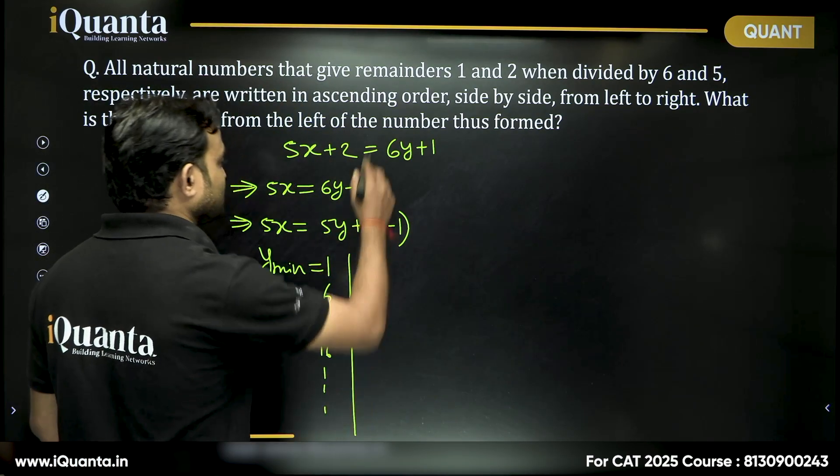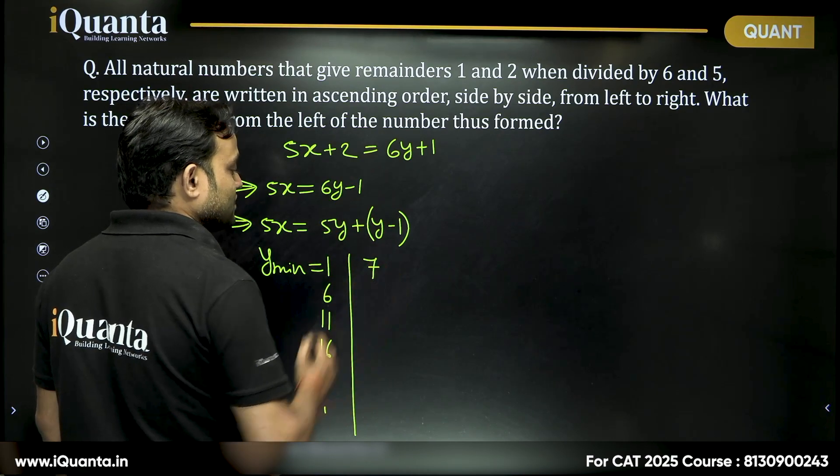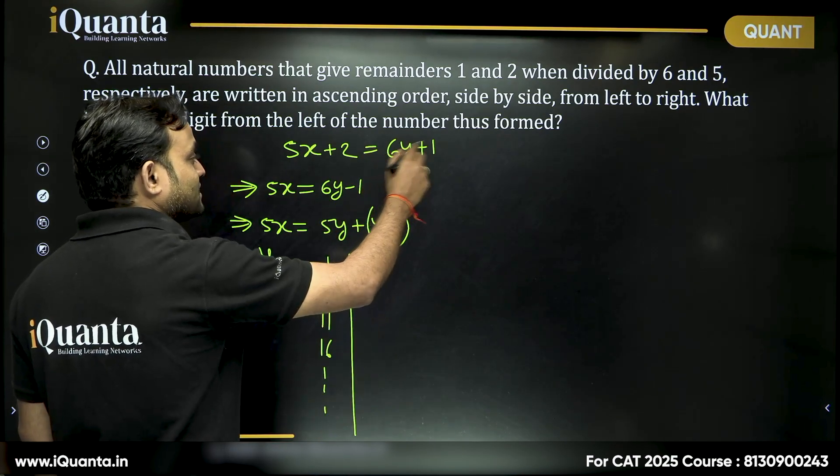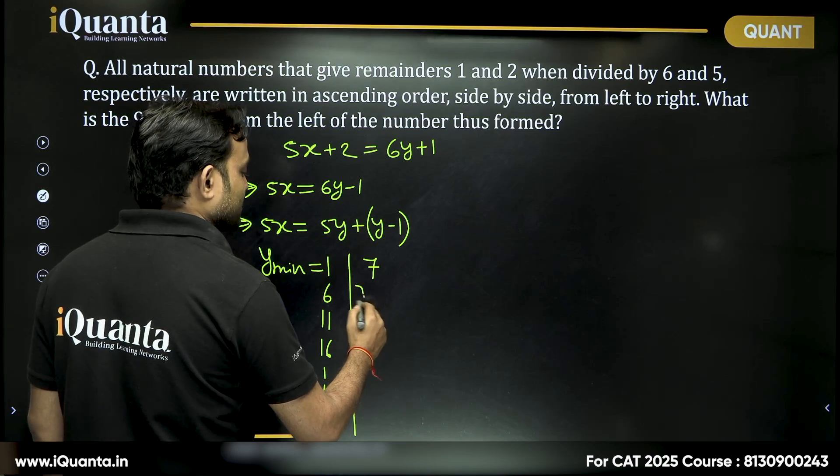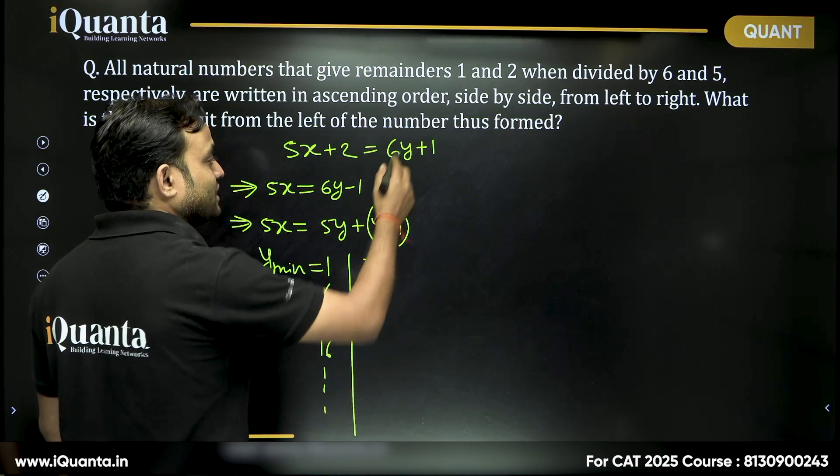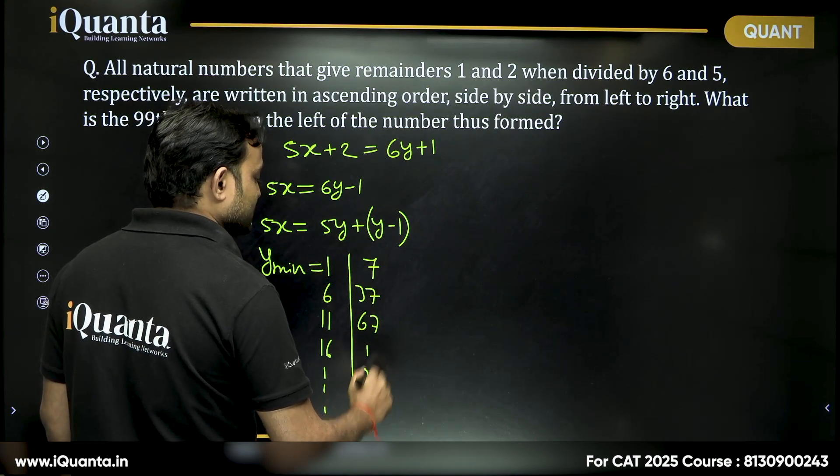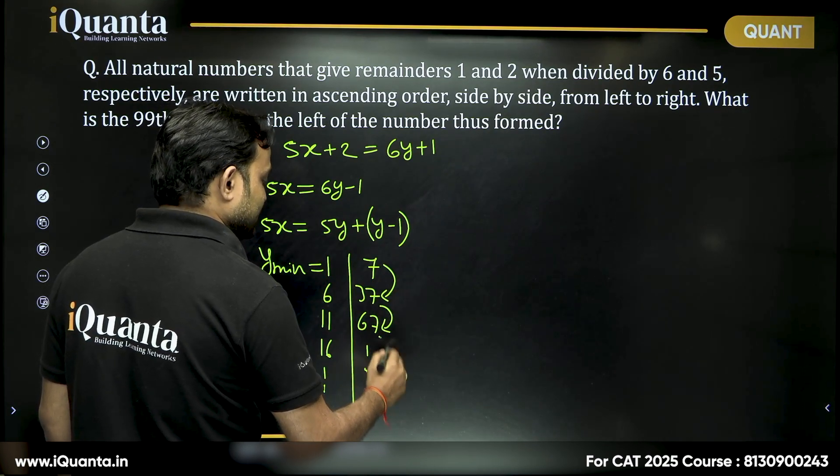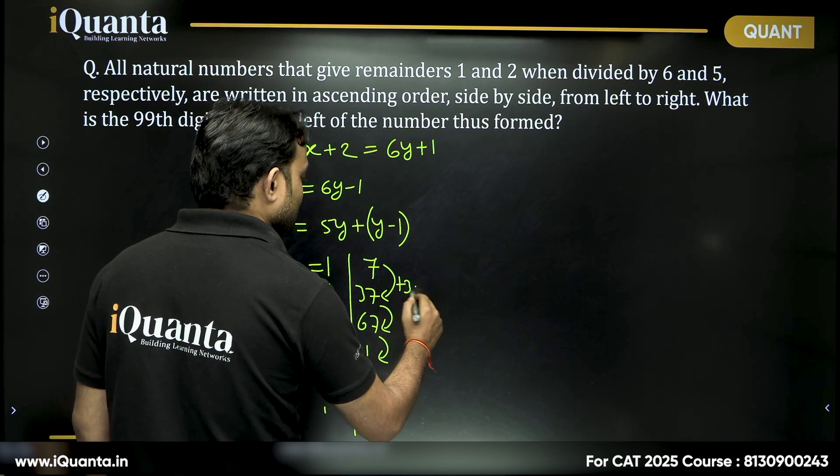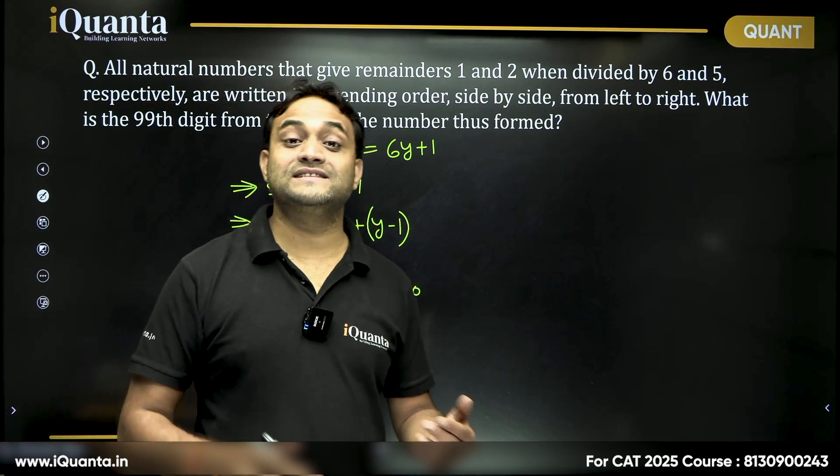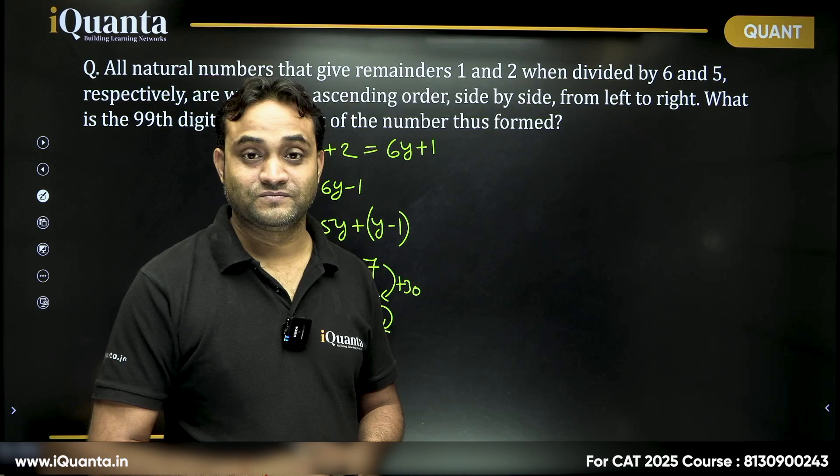If you check the value, the smallest value is 7. Next value is 36 plus 1, which is 37. Then the next value is 66 plus 1, which is 67. Can you see, the number is increasing by 30. And what is this 30? This 30 is nothing but the LCM of 5 and 6.